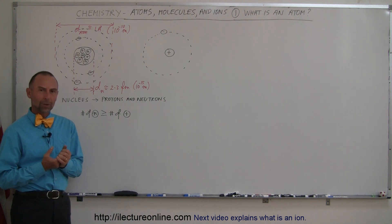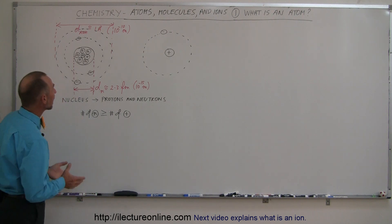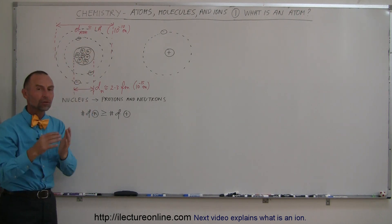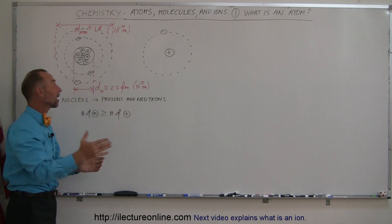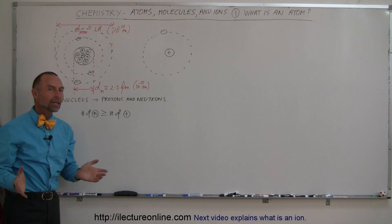A lot of people think they know what an atom is. Typically, when you ask people what is an atom, they say an atom has a nucleus, and inside the nucleus you have protons and neutrons, and outside the nucleus you have some electrons that are flying around the nucleus. That is indeed correct.